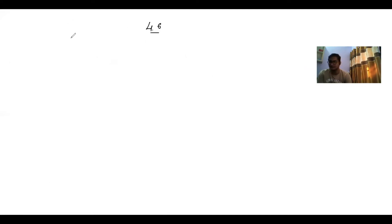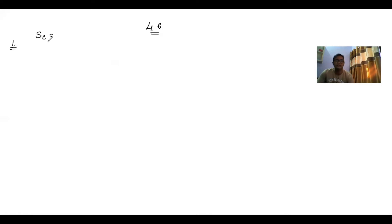In Exercise 4.6, Question number 1: The information regarding marks of the students of two classes of a school is given below. Find the combined standard deviation of the marks obtained by the students. We have to find SC, and to do that we cannot find SC directly — first we need to find x̄c.